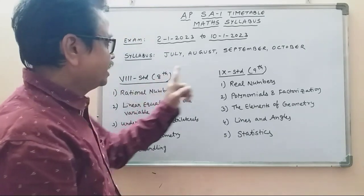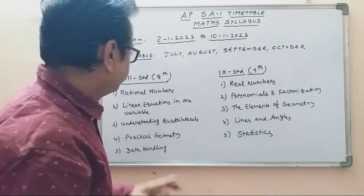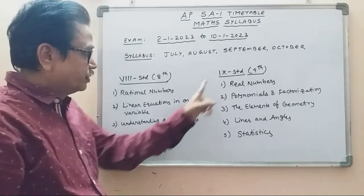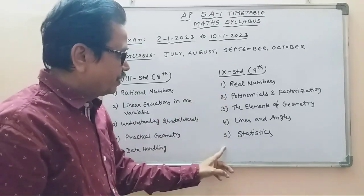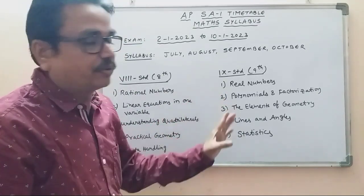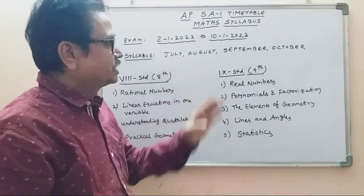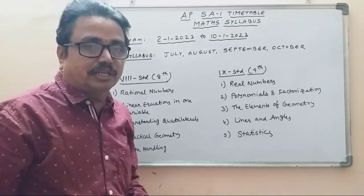Class 8 and Class 9 — this is 5 chapters each. 8th has 5 and 9th has 5. So this covers July, August, September, October.